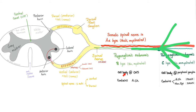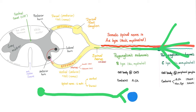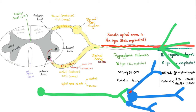Where is the cell body of the preganglionic fiber? It's in the lateral horn cell, inside the central nervous system. Where is the postganglionic cell body? It's in the ganglion — peripheral, not in the central nervous system. Preganglionic fibers secrete acetylcholine. Postganglionic fibers depend on type: if parasympathetic, they secrete acetylcholine; if sympathetic, they secrete norepinephrine — with the tiny exception of the postganglionic sympathetic fibers going to sweat glands, which secrete acetylcholine.